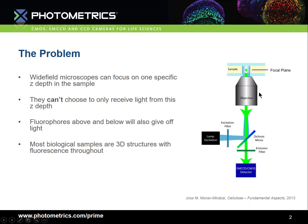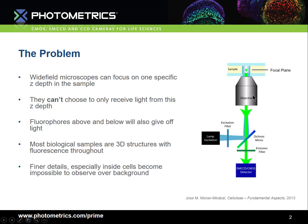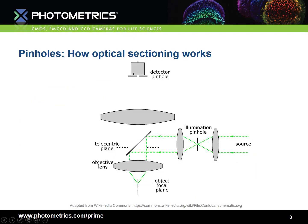Most biological samples are three-dimensional structures, with fluorescence throughout. Finer details, especially those inside cells, become impossible to observe over the background, and often a microscopist will want to observe inside cells.